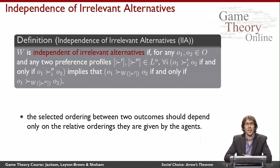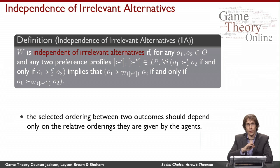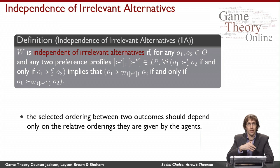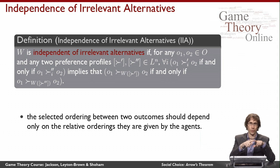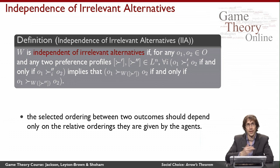The next definition we need is the idea of independence of irrelevant alternatives. Intuitively, the social welfare function should decide the ordering between two outcomes A and B based only on the relative rankings that all of the agents give to these two outcomes. It should only be allowed to look at whether each individual agent puts A above or below B in order to decide whether A should go above or below B in the final ranking, and this should be true for every pair of outcomes.